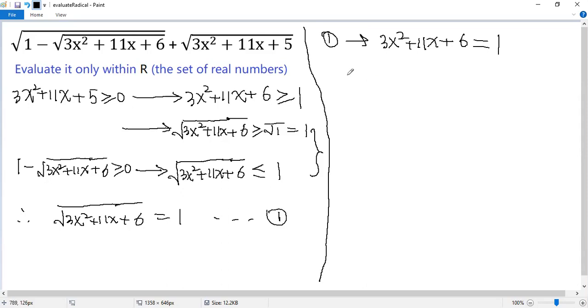Now subtract both sides by 1, so we get 3x² + 11x + 5 = 0.